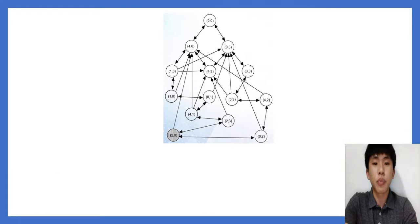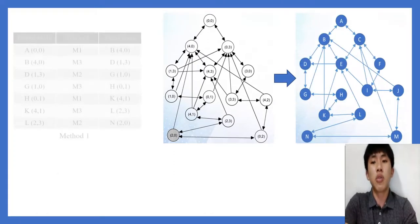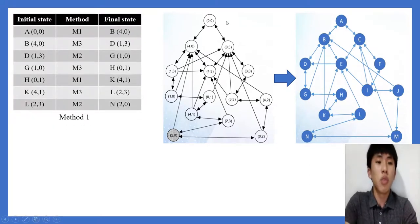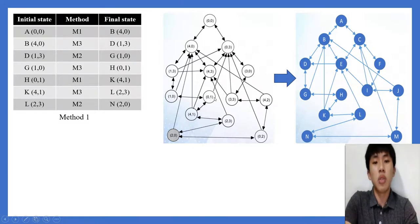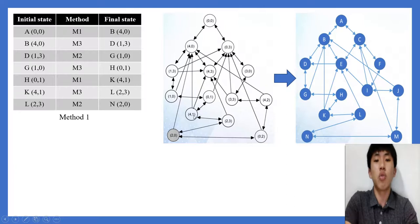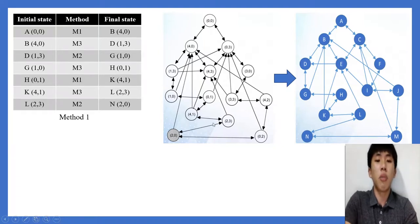Next we show 2 simplified diagrams. For Method 1: starting from A=(0,0), using Method 1 gives (4,0) as B. Using Method 3 to pour from x to y gives (1,3). Using Method 2 to empty y gives (1,0). Using Method 3 to pour from x to y gives (0,1). Using Method 1 to fill x=4 gives (4,1). Using Method 3 from x to y gives (2,3). Finally, using Method 2 to empty y gives the goal state (2,0).